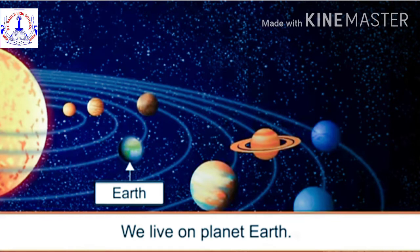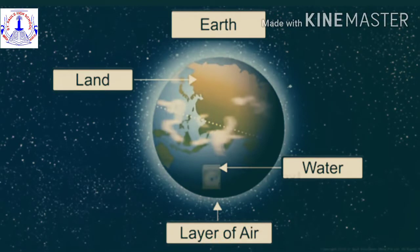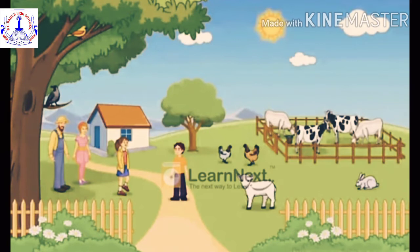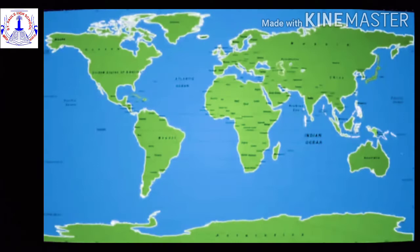Earth is made up of land and water and surrounded by a layer of air. Our Earth is the only planet to have life - plants, animals, and human beings. Long, long years ago, people thought that the shape of the Earth was flat.